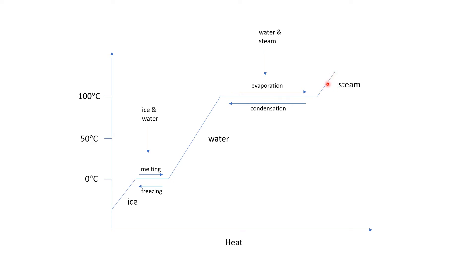We can use this same heating curve as a cooling curve if we just travel downward. From steam at the boiling point, the steam starts to condense into liquid water. Once all the steam has condensed, if we continue to remove heat the liquid water cools, the temperature decreases, and water molecules move slower. We get to the freezing point where the water molecules become fixed next to each other and freeze into ice, giving both ice and water, until all the water has frozen.